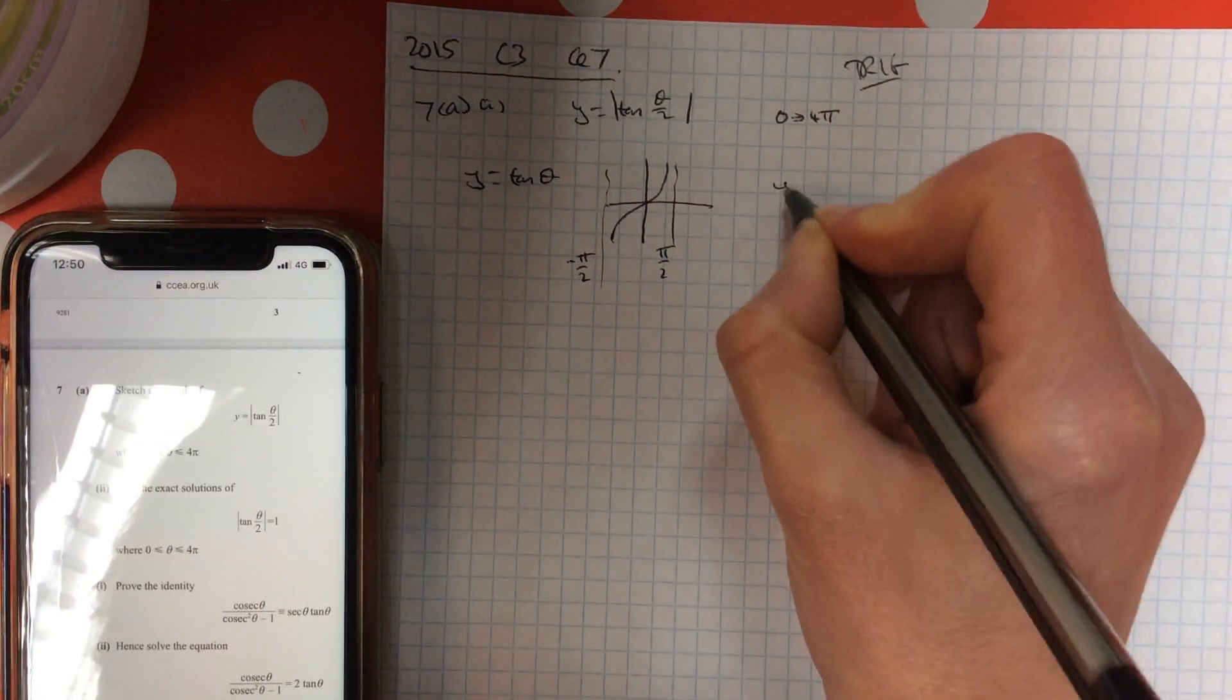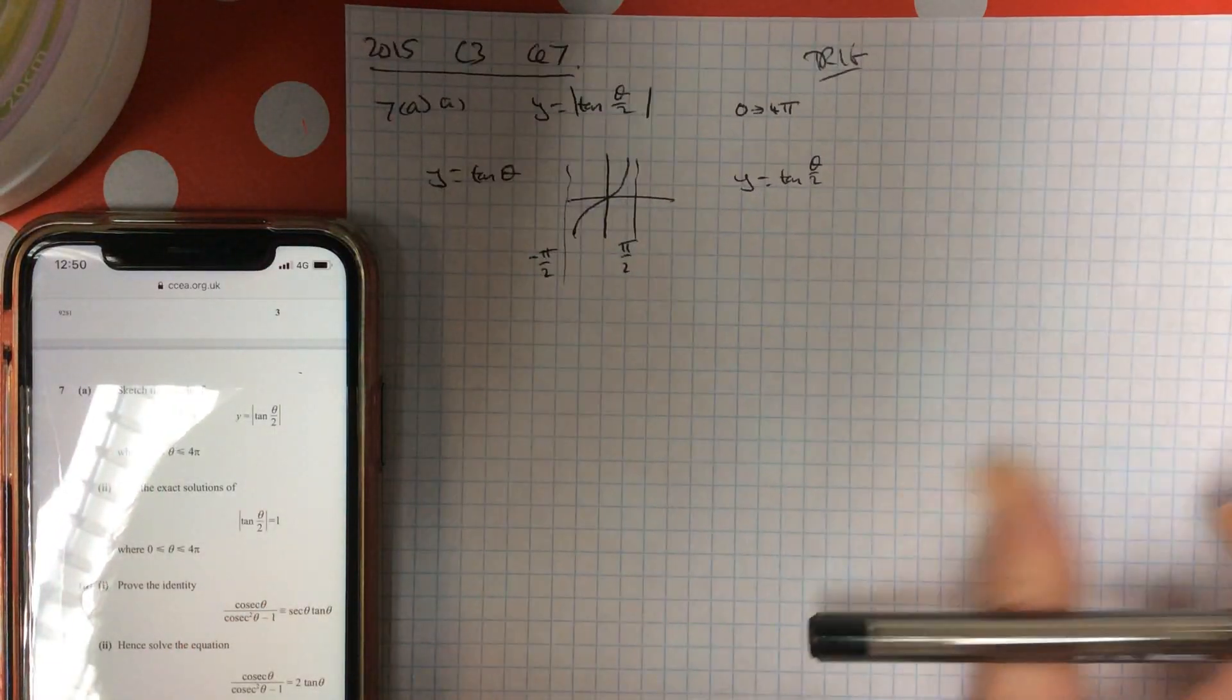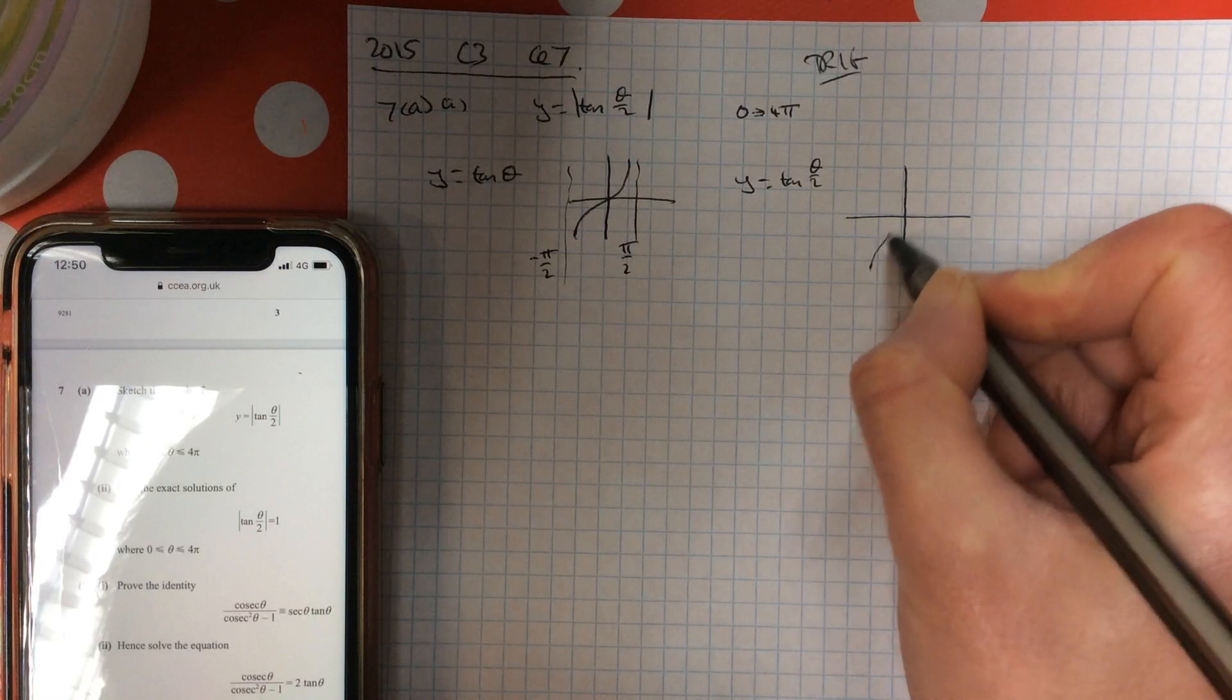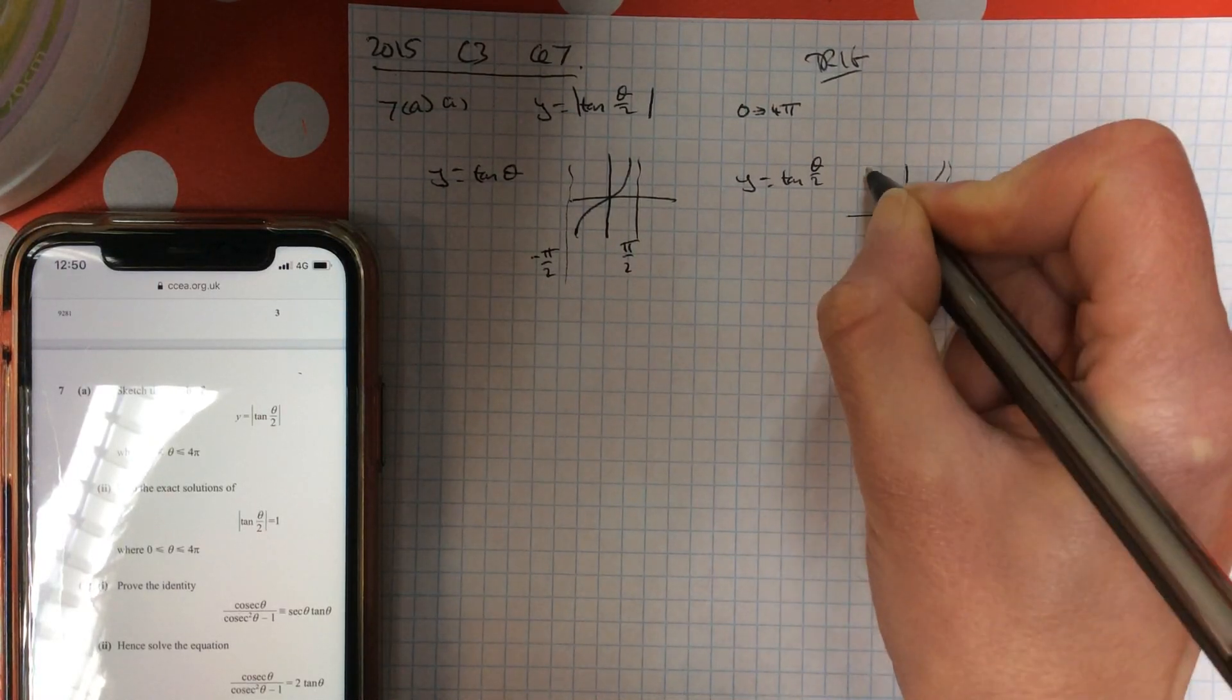I'm going to take that graph and I'm going to divide the x's by 2. You do the opposite inside the brackets, so that means I am going to double my x's. So it will now asymptote at pi and at minus pi.